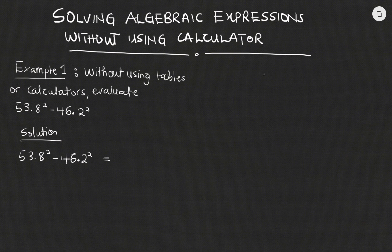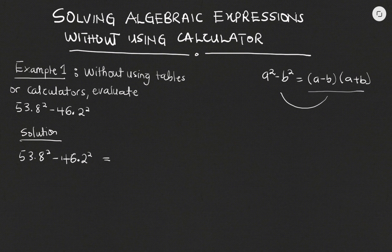So for example, if I have a squared minus b squared, this is what we call difference of two squares. So I can rewrite this as a minus b multiplied by a plus b. Now if you expand this bracket, you'll be getting what you have over here. So that is why it is a difference of two squares.